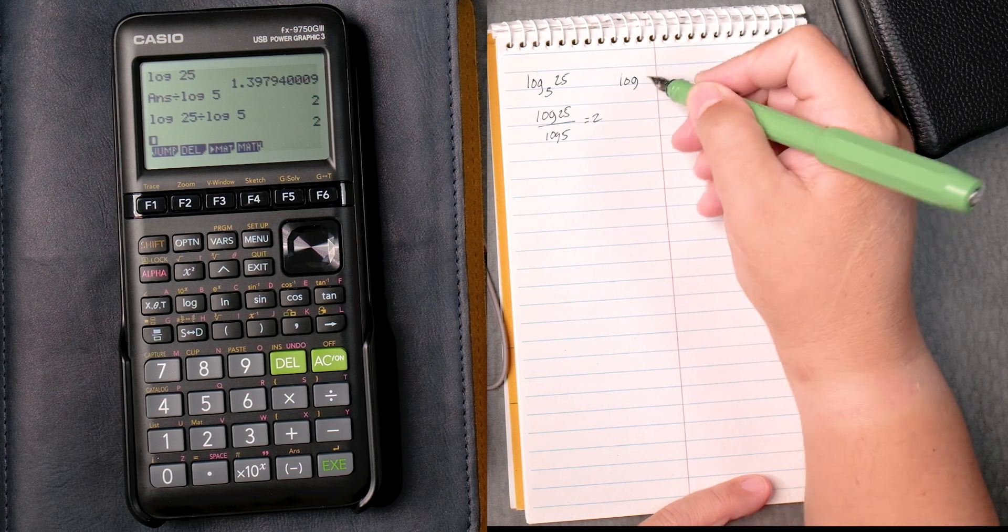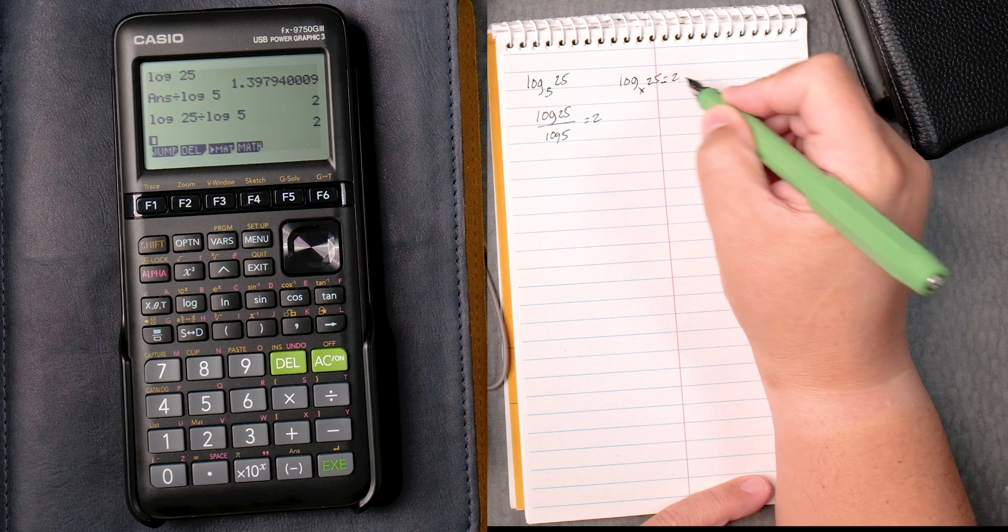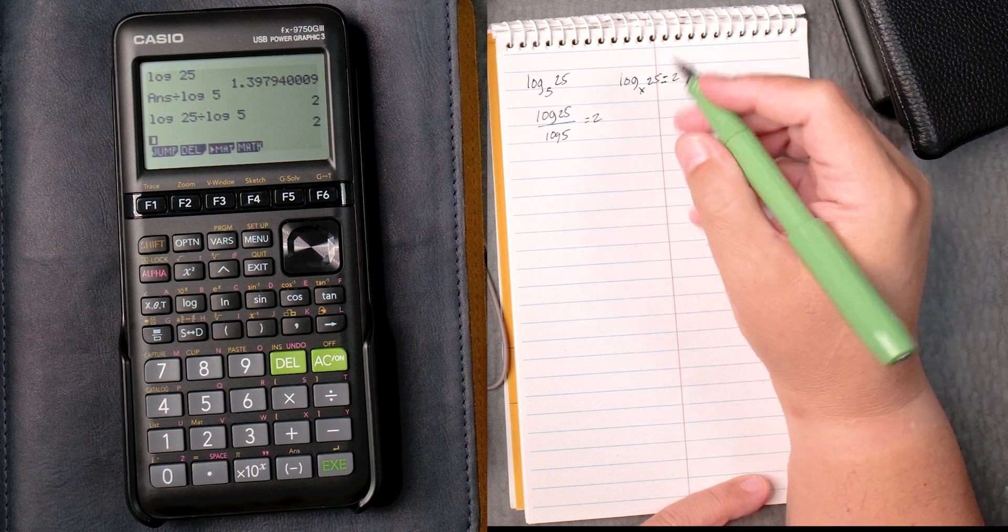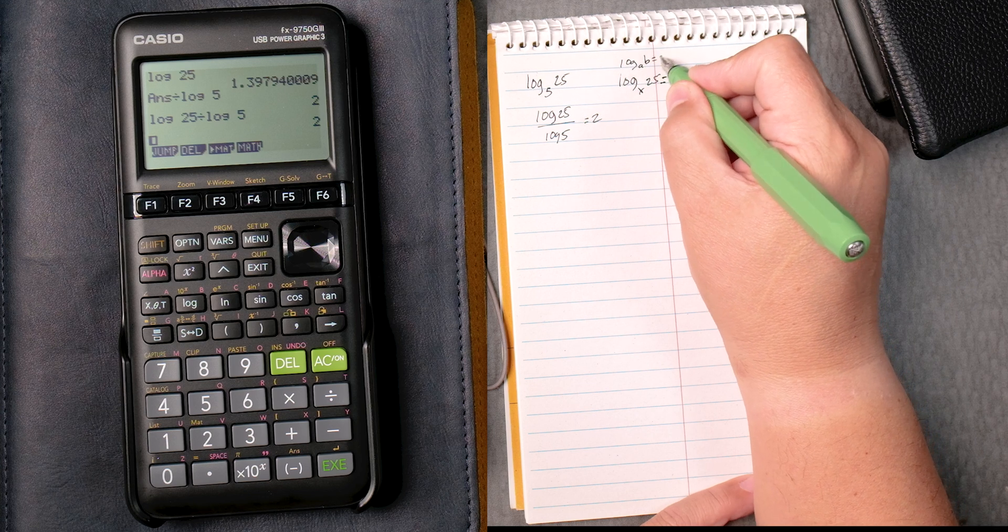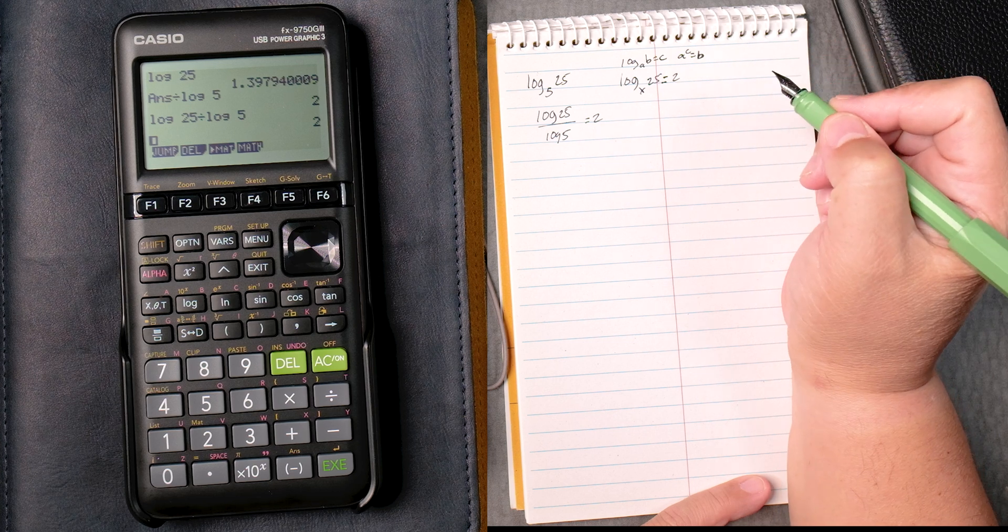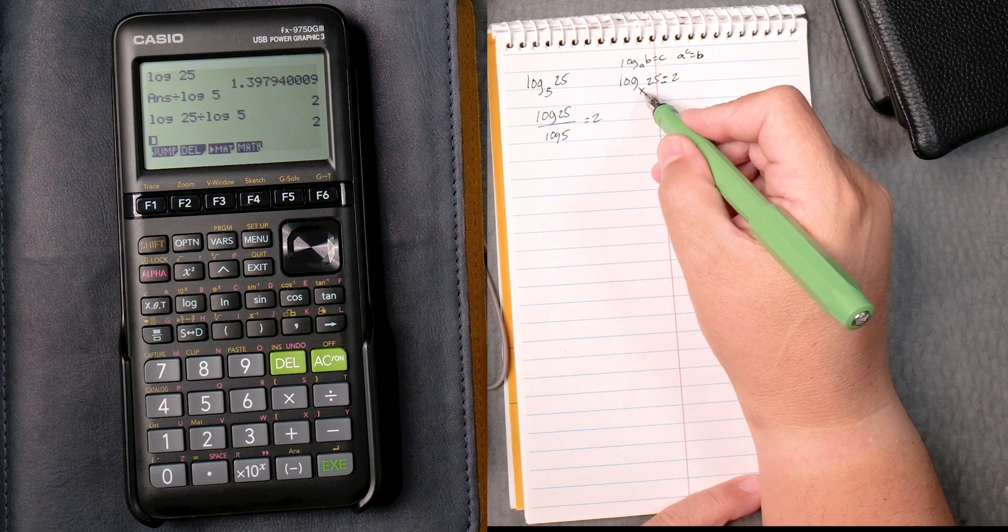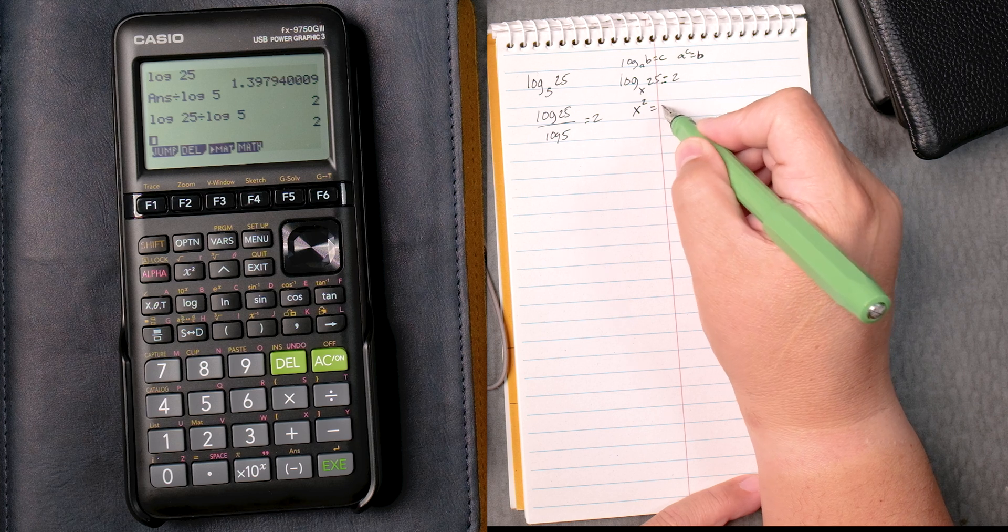Now let's say we have the log of x, 25 equals 2. There's a rule that says something like the log of a, b equals c, where a to the c is equal to b.